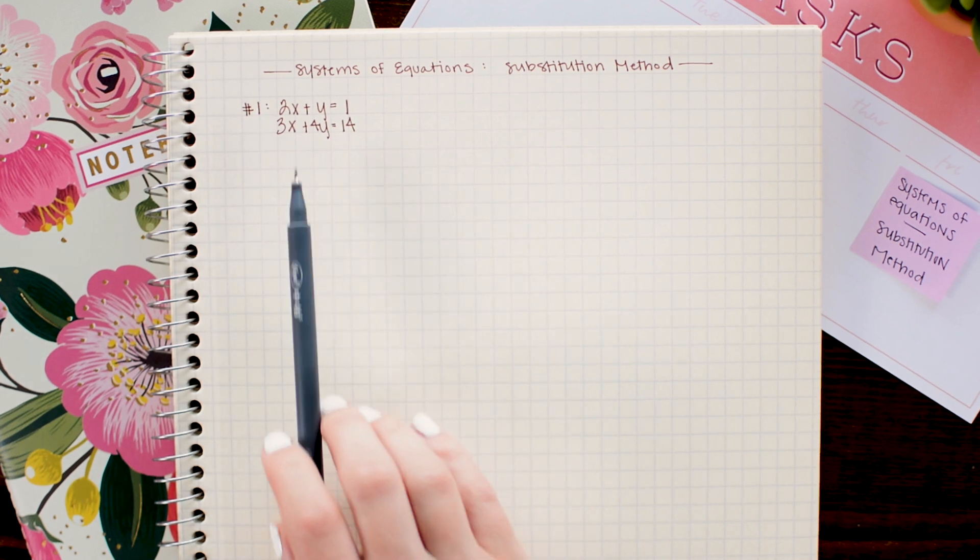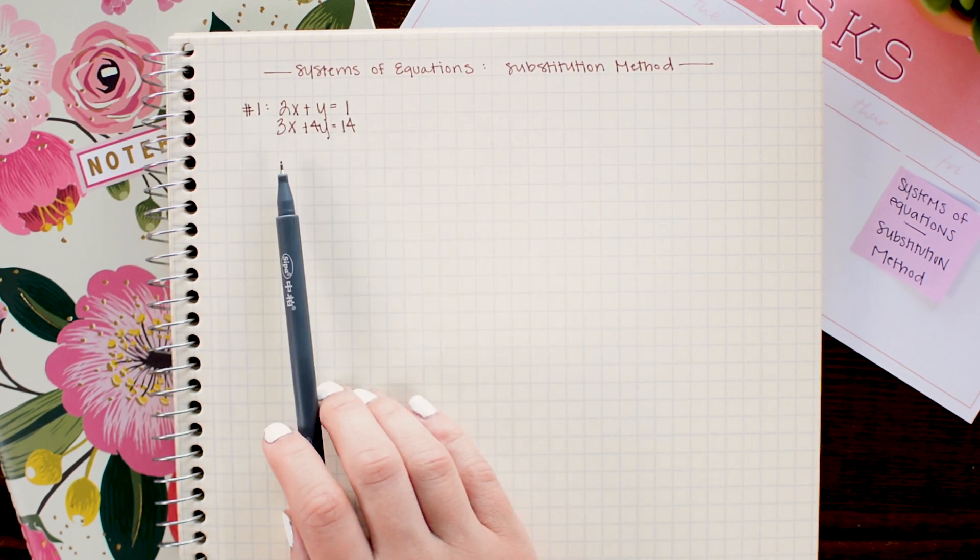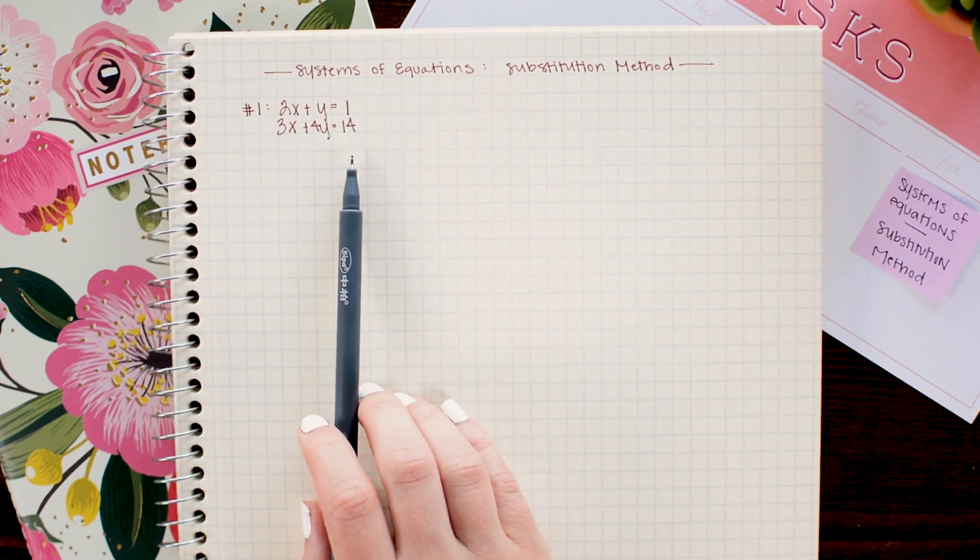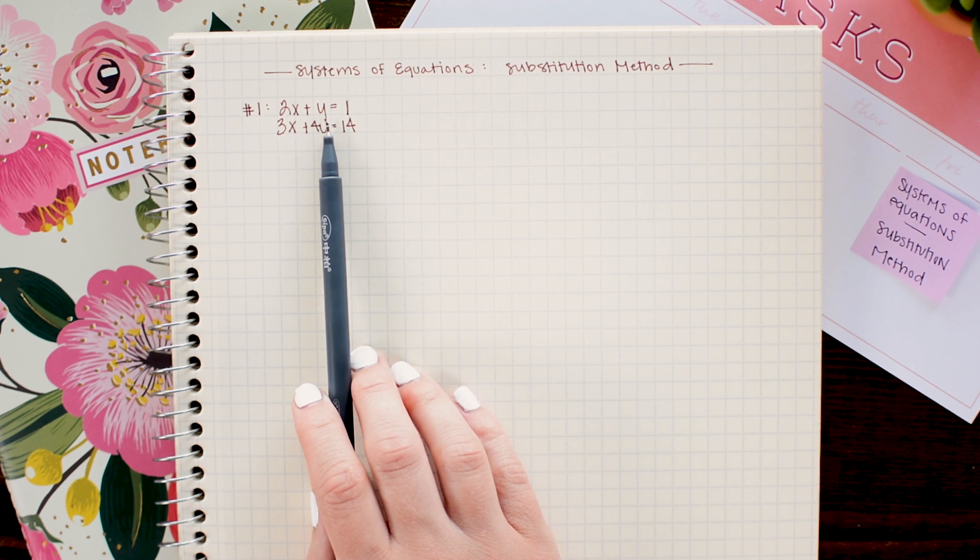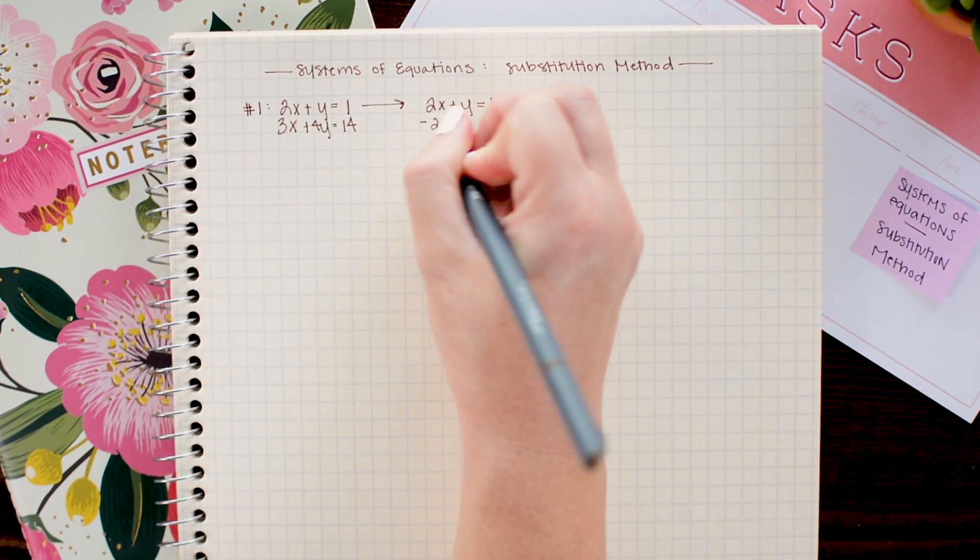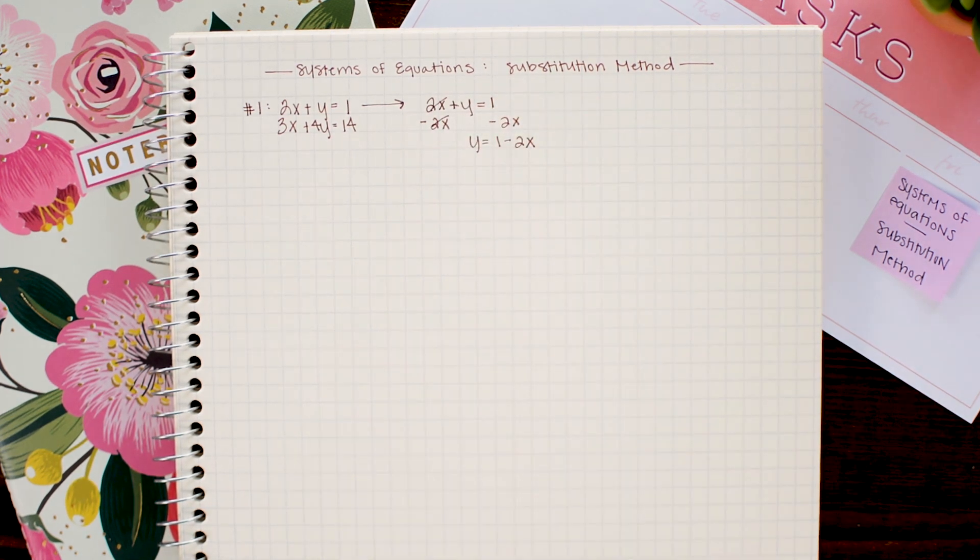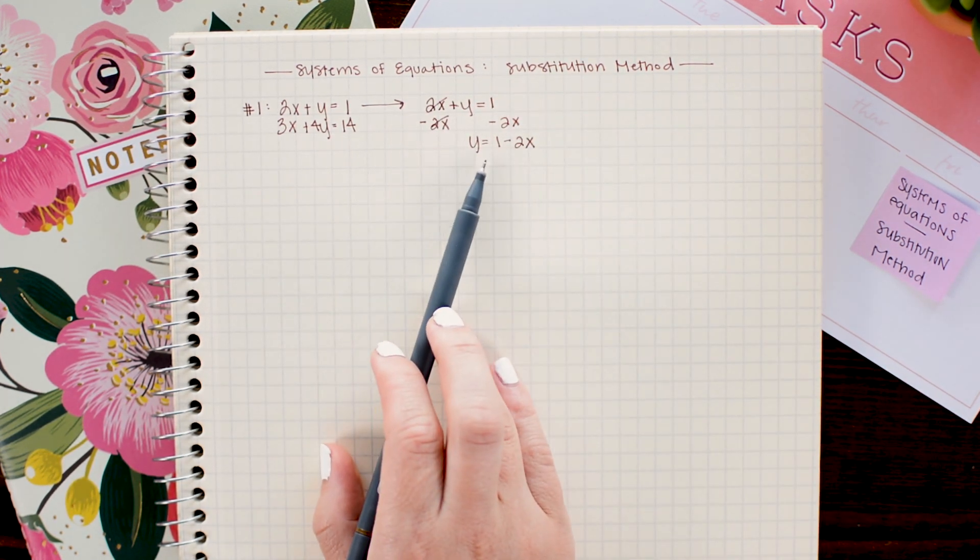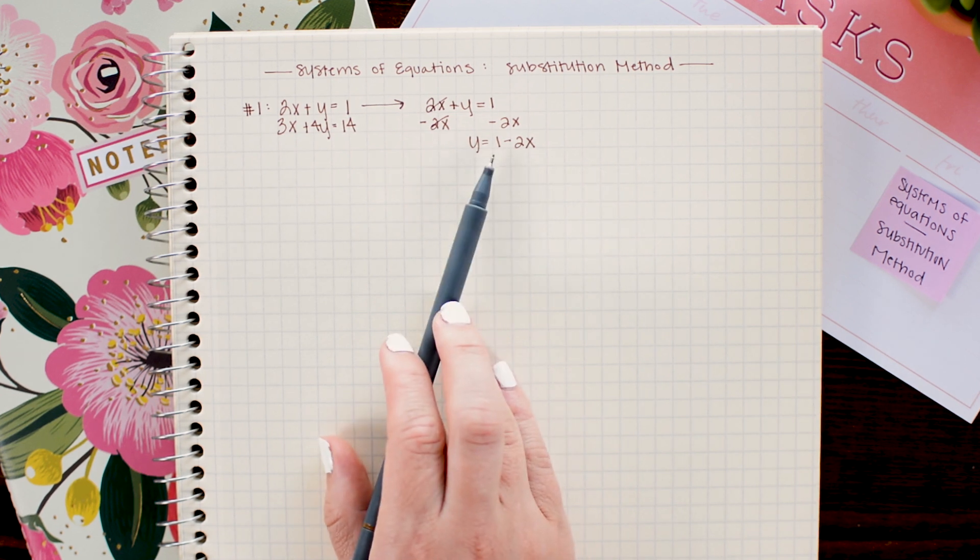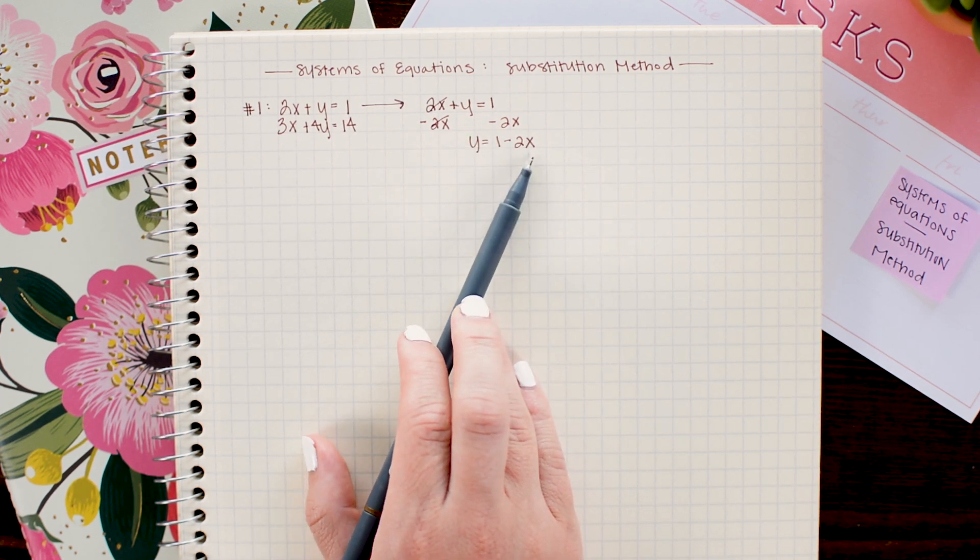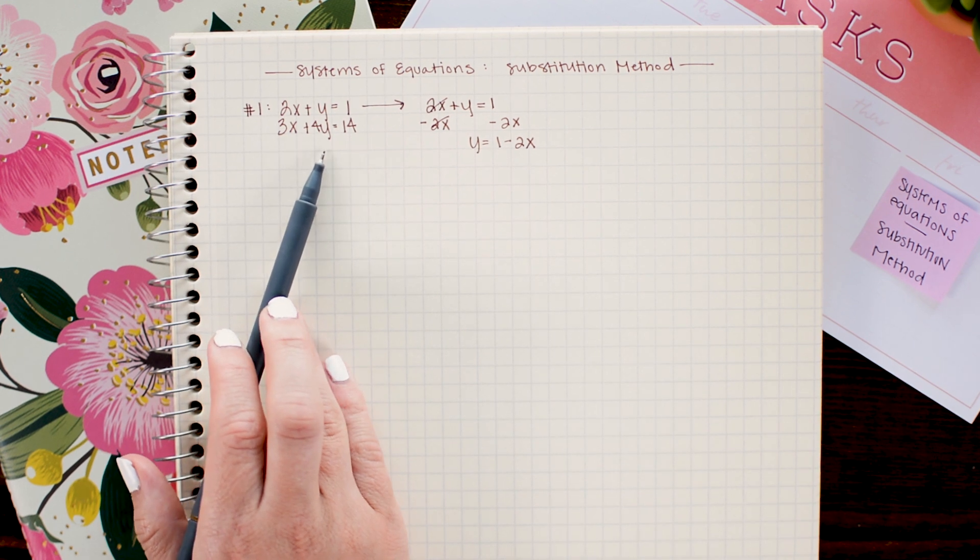So in problem number one here we have 2x plus y equals 1 and 3x plus 4y equals 14. I notice immediately that the y in the first equation doesn't have a coefficient written in front of it, so that is the variable I want to isolate. After solving for y, I get y equals 1 minus 2x and now what I want to do here is take this relationship and substitute it in for y in the other equation.